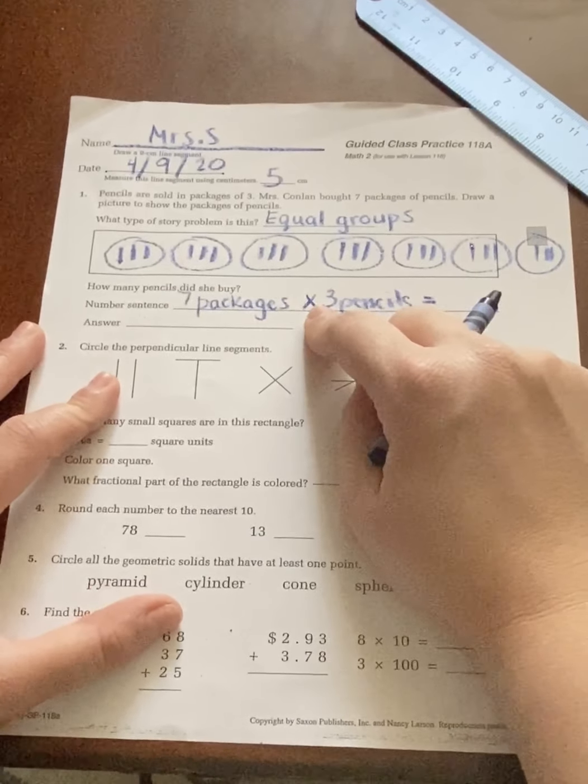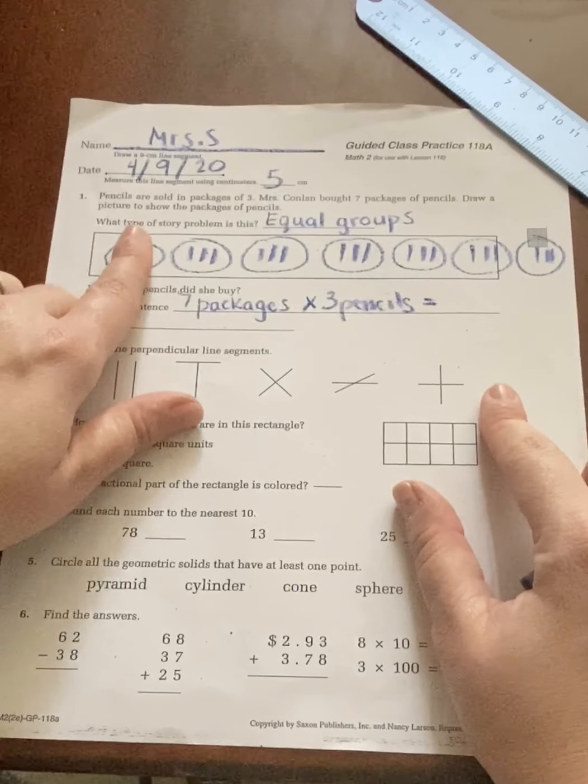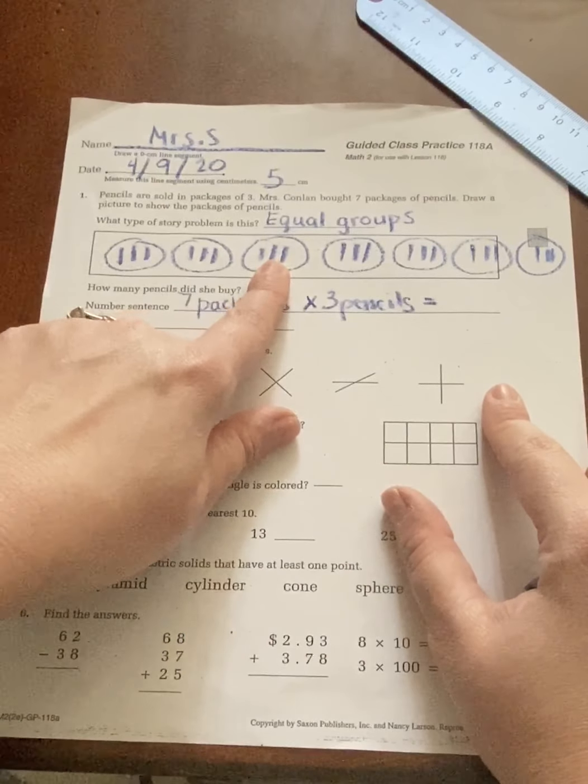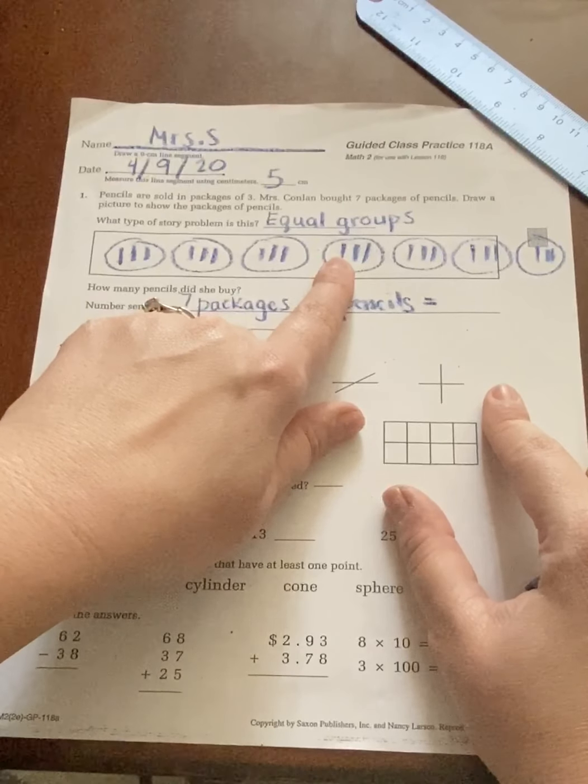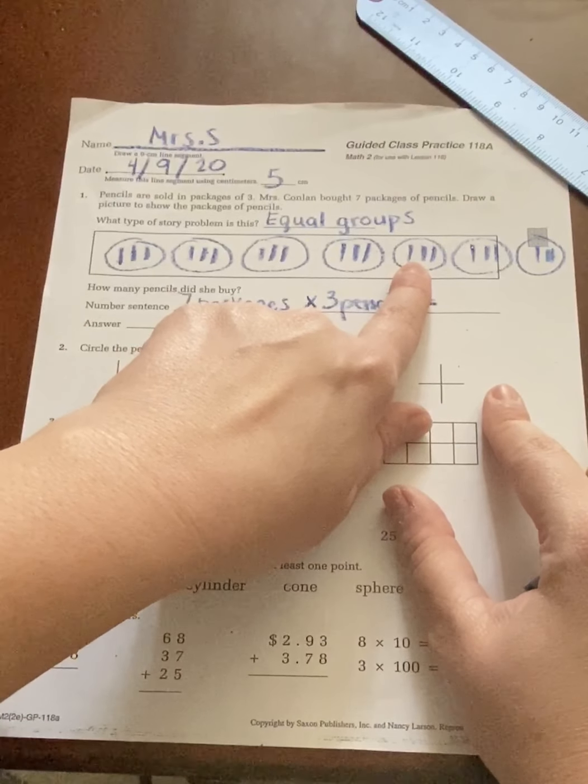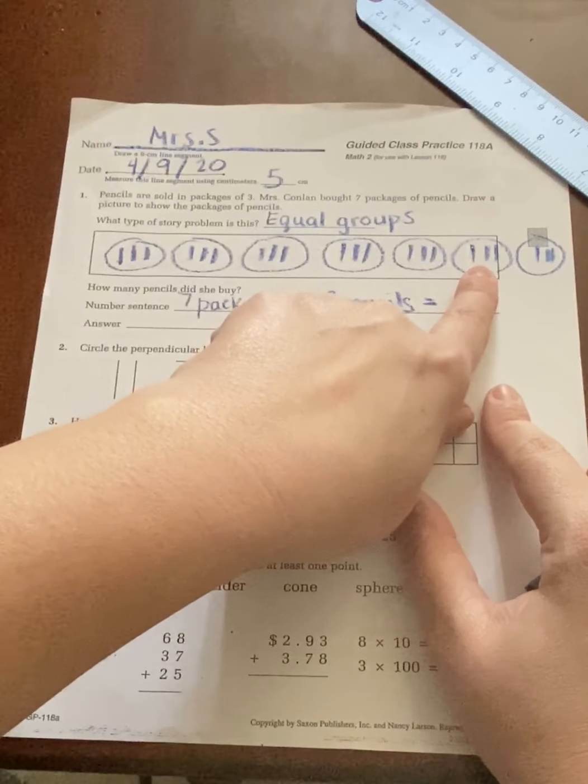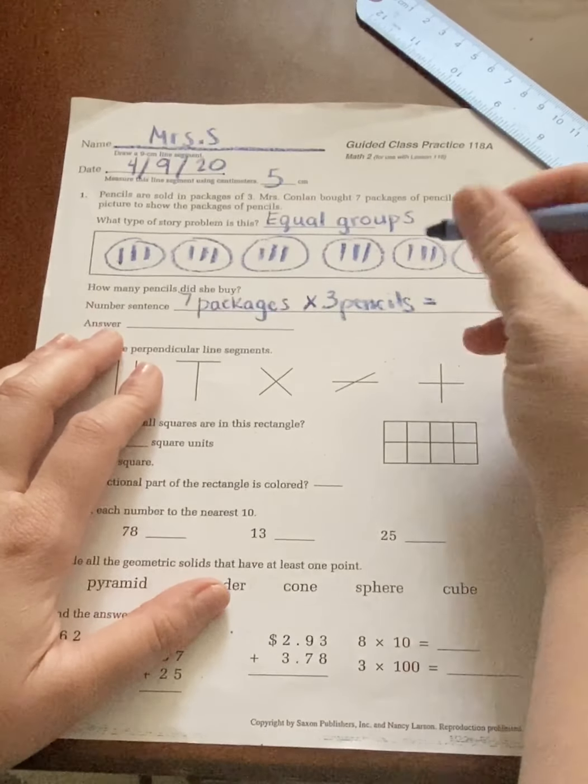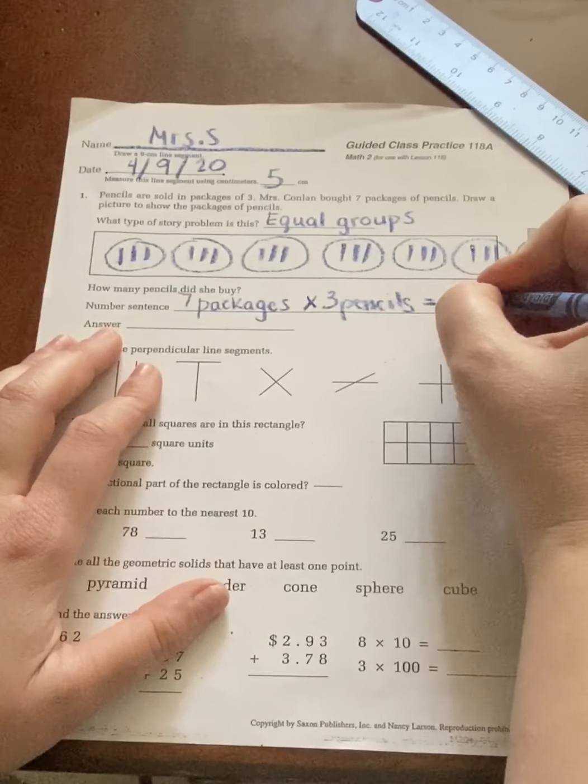So let's go ahead and count that out. So I have three, six, nine, twelve, fifteen, eighteen, twenty-one. So seven times three is twenty-one.